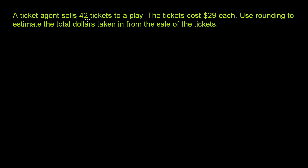A ticket agent sells 42 tickets to a play. The tickets cost $29 each. Use rounding to estimate the total dollars taken in from the sale of the tickets. Now, if we wanted the exact number, we could say 42 times 29 and work out the multiplication. But they essentially want us to be able to do it in our head — we want to round the numbers first and then multiply.